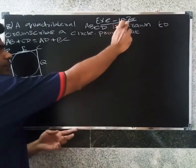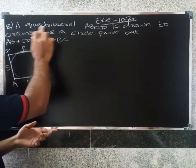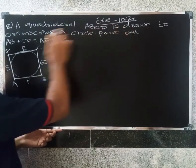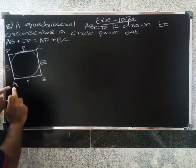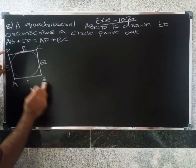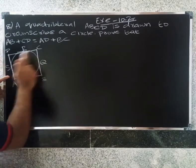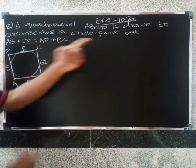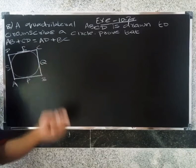Welcome back. In Exercise 10.2, the problem states: A quadrilateral ABCD is drawn to circumscribe a circle. Prove that AB + CD = AD + BC.